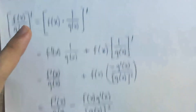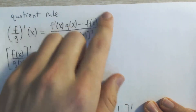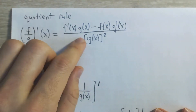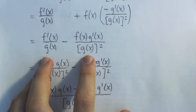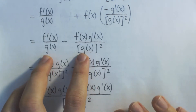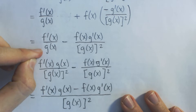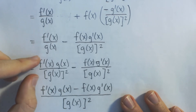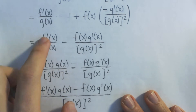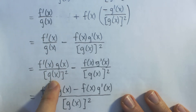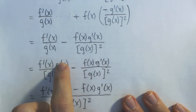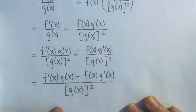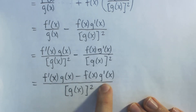Now we have two fractions and we want to combine them together, because our final answer for the quotient rule is given as one big fraction. We have g of x squared in the denominator of this one, so when we combine these two fractions we want to find a common denominator, which is g of x squared. We multiply both numerator and denominator of the first fraction by g of x — so I put g of x in the numerator and now have g of x squared in the denominator. When we have two fractions with the same denominator, we can just subtract their numerators, and so we get the derivative of f times g minus f times the derivative of g, divided by g of x squared.